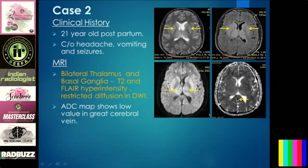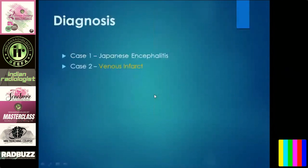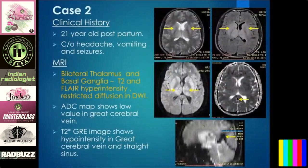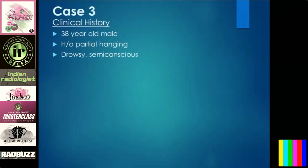Further imaging shows the ADC with a low value in the great cerebral vein. When you see a low value in the great cerebral vein, you need to do an MR venogram. The MR venogram showed hypointensity in the great cerebral vein and straight sinus — a classical case of venous infarct. Whenever you suspect a venous infarct, do T2, FLAIR, and diffusion. When you see low signal on ADC, always do an MR venogram to rule out thrombosis in the cerebral veins.